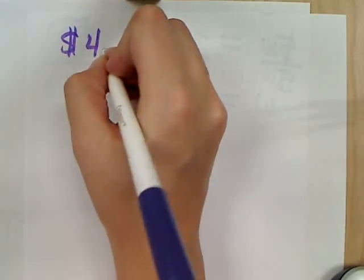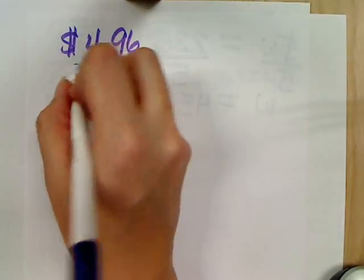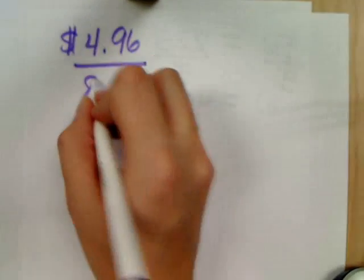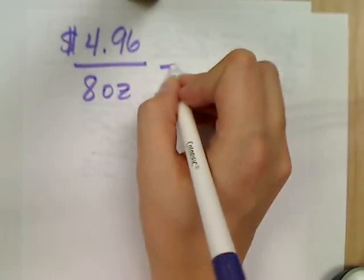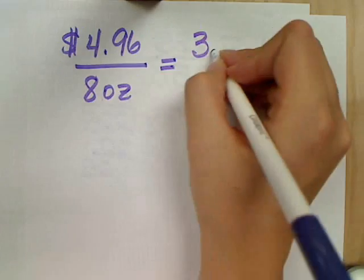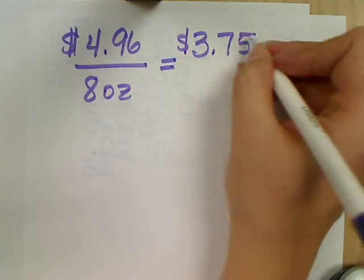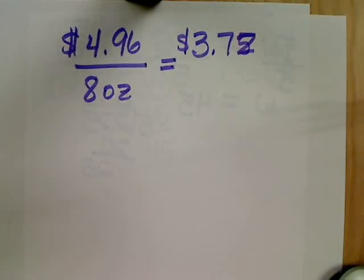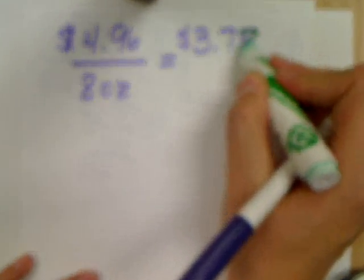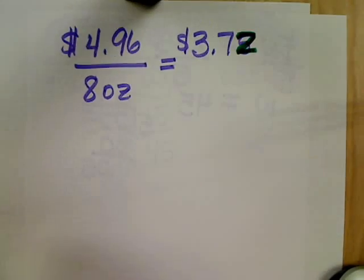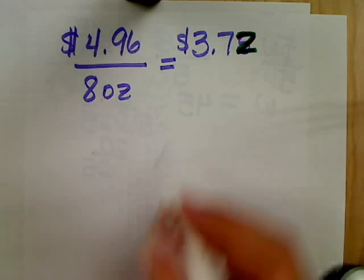Okay, this one says $4.96 over 8 ounces equal to $3.75. Oops, $72. That should be a 2. $3.72 over 6 ounces.